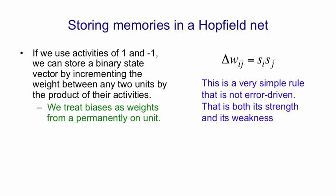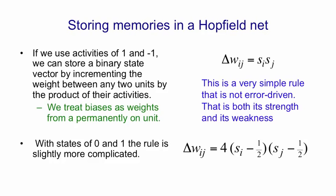We can also have biases, and as usual we treat the biases as weights from a permanently on unit. If you want to use states of 0 and 1 for units, which is what we'll use later, the update rule is only slightly more complicated.